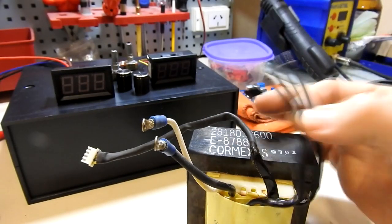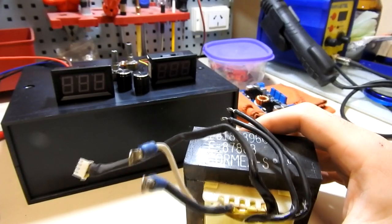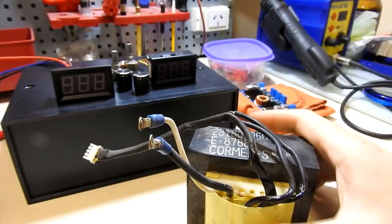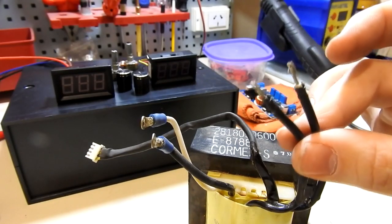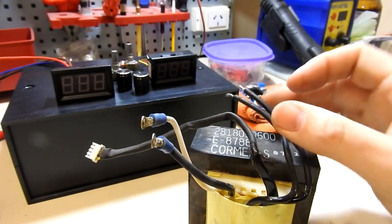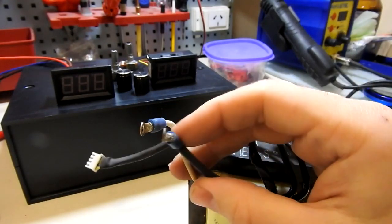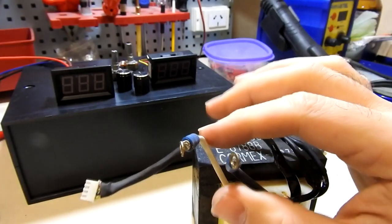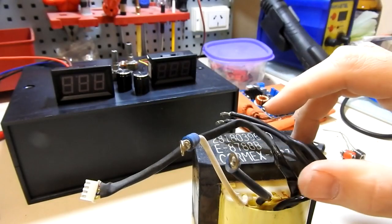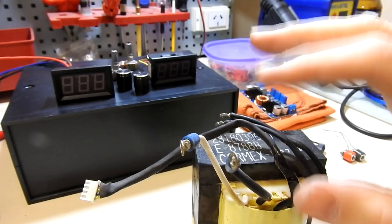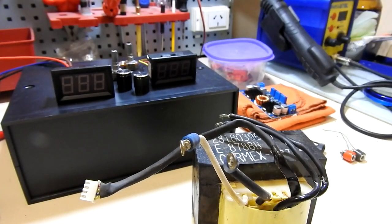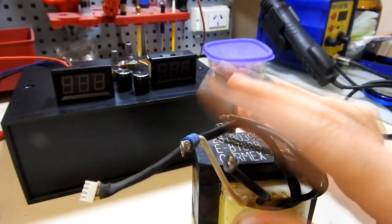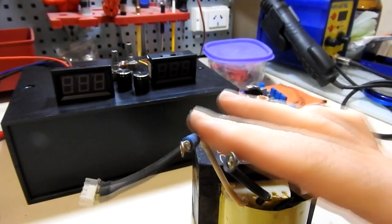A nosotros lo que nos interesa es que este transformador de UPS, la UPS estaba, su electrónica estaba quemada, pero el transformador estaba bien. Nos permite conectar 220 volt y nos permite extraer 12, en realidad este trafo unos 14 volt y pico en corriente alterna. Y cuando rectifiquemos eso se va un poco más para arriba, será unos 20 volt aproximadamente rectificada.